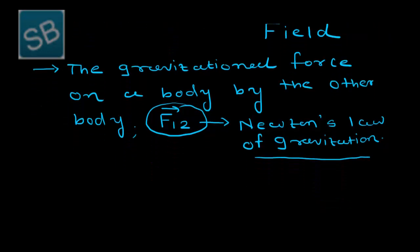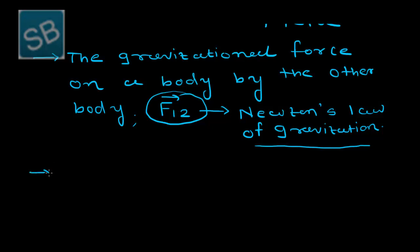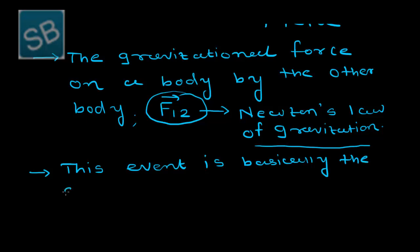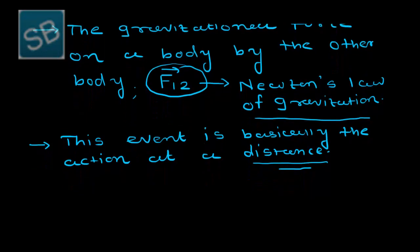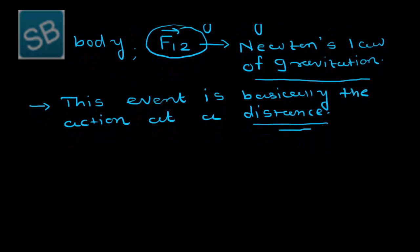If you see, it is basically the action at a distance. Why have they written distance here? Because if you see the formula of force acting on a body, which is exerted by another body, that force is inversely proportional to the square of the distance between them. This process is called action at a distance, and the force existing on a body is separated by some distance.